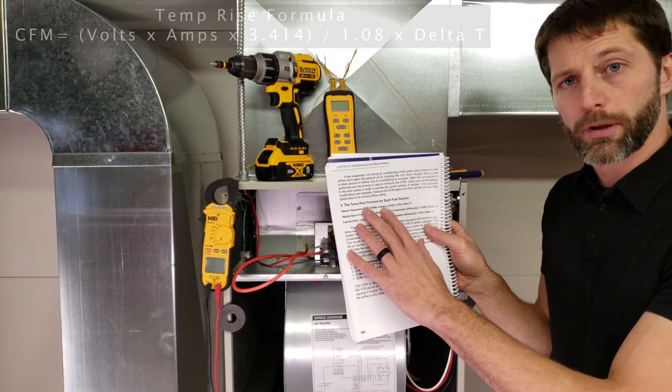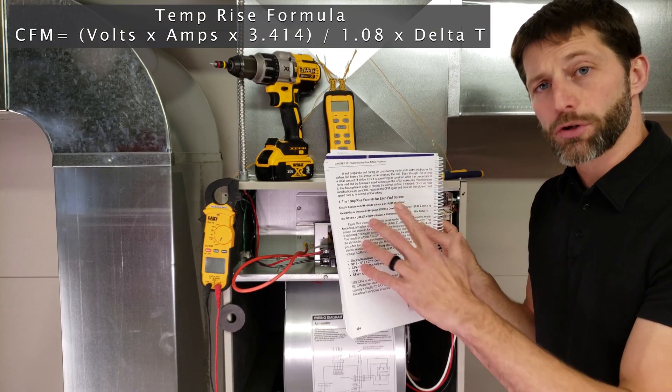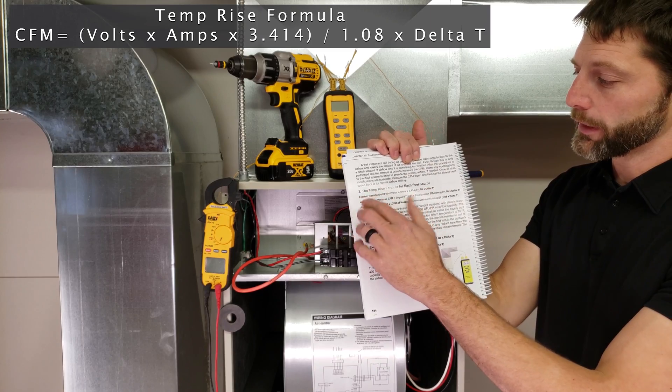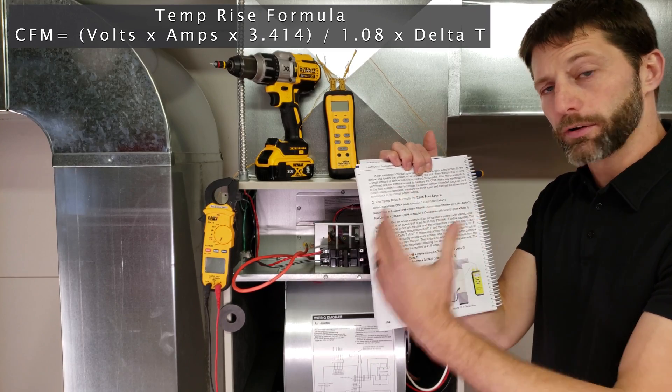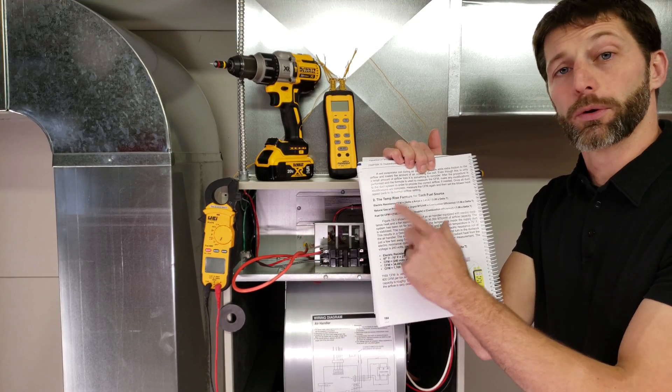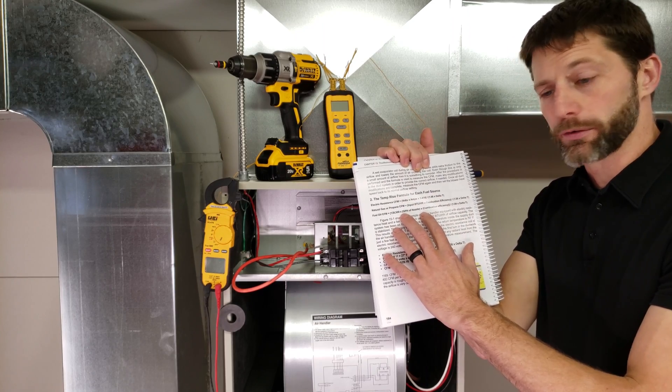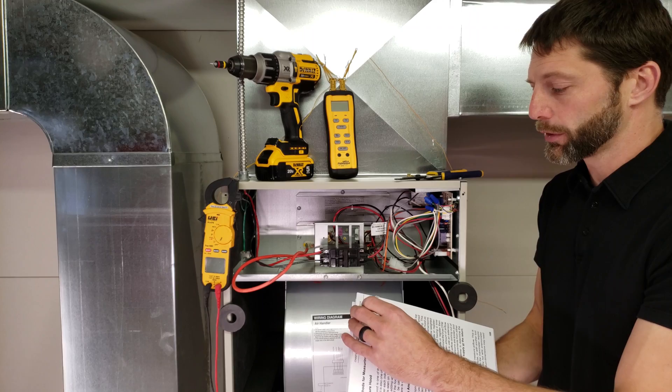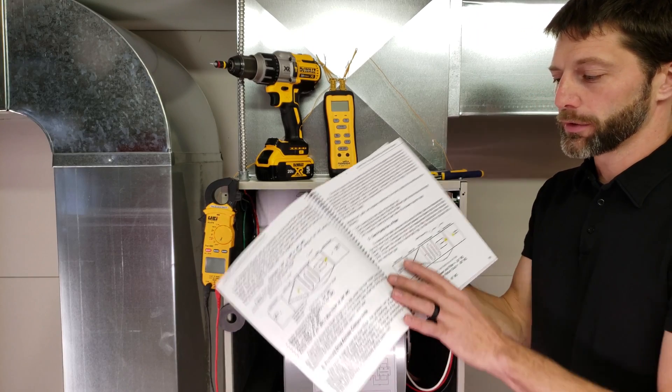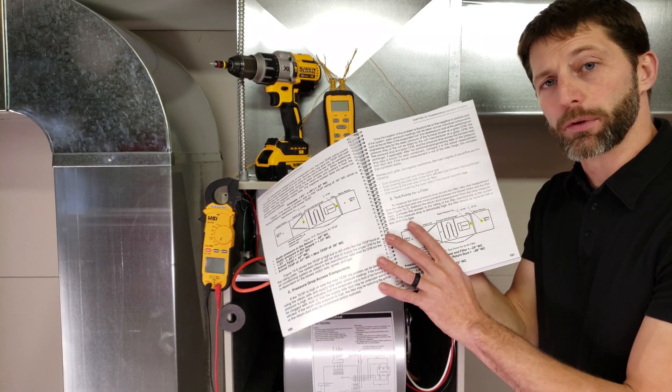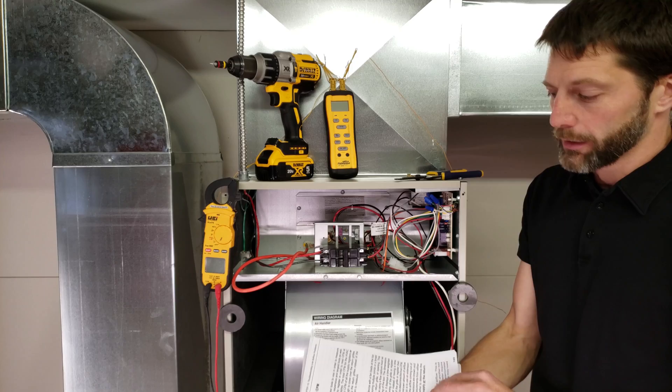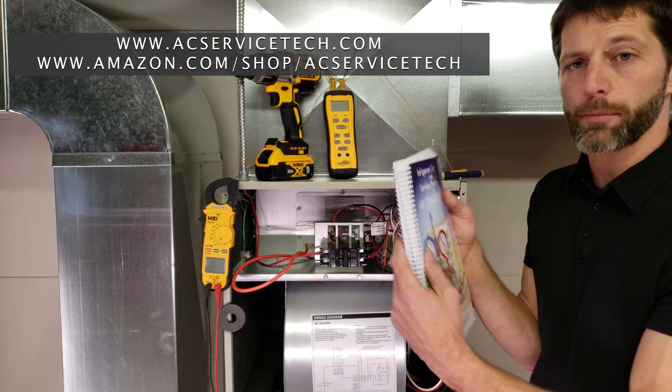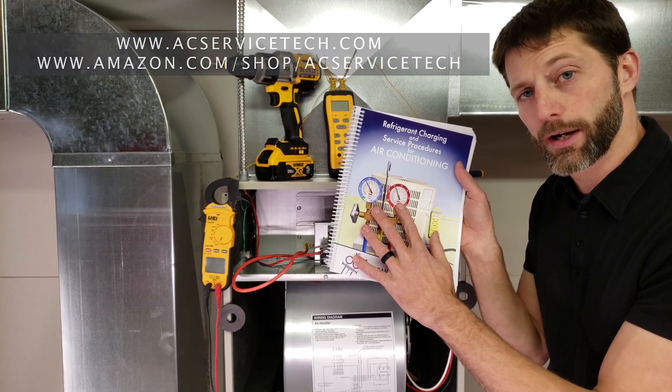So we have our temporized formula. We have that written in our book, The Refrigerant Charging and Service Procedures for Air Conditioning, and in this book we go over the temporized formula for electric resistance heaters, such as in an air handler, and also in gas furnaces, and also in oil-fired furnaces. We have an example down below, and in this book we also go over some troubleshooting problems and static pressure readings. So we go over some examples of that for air handlers and for furnaces. So you can check out this book over at our website at ACServiceTech.com, and it's also available over at Amazon.com.